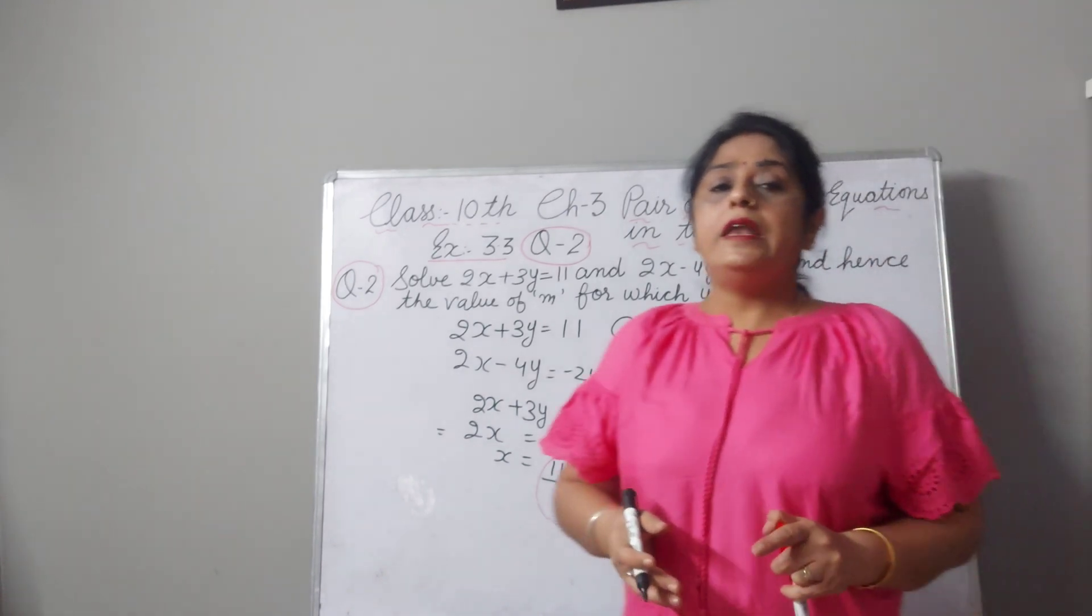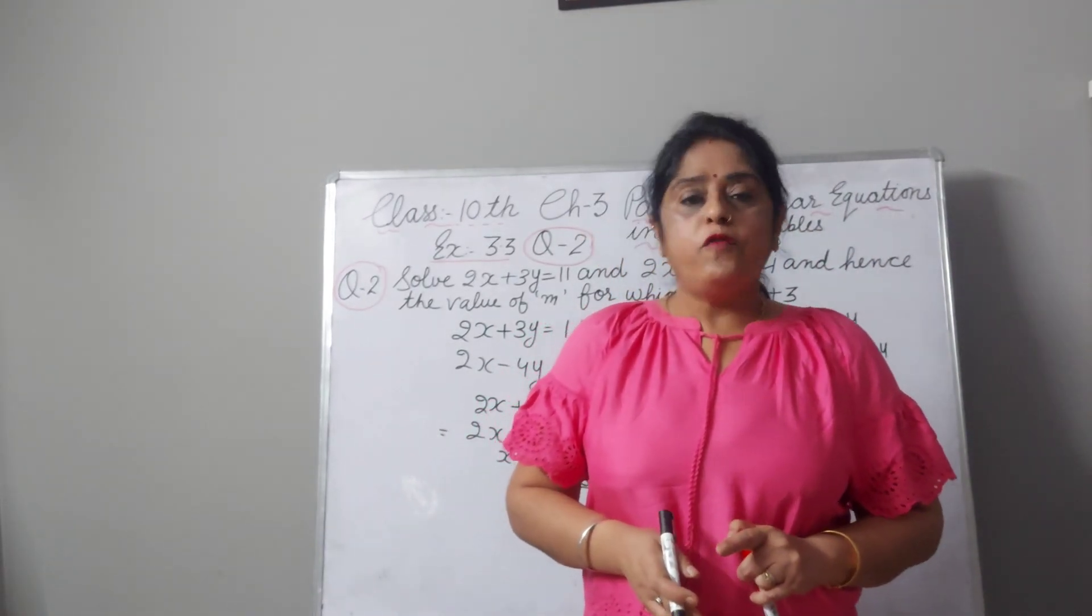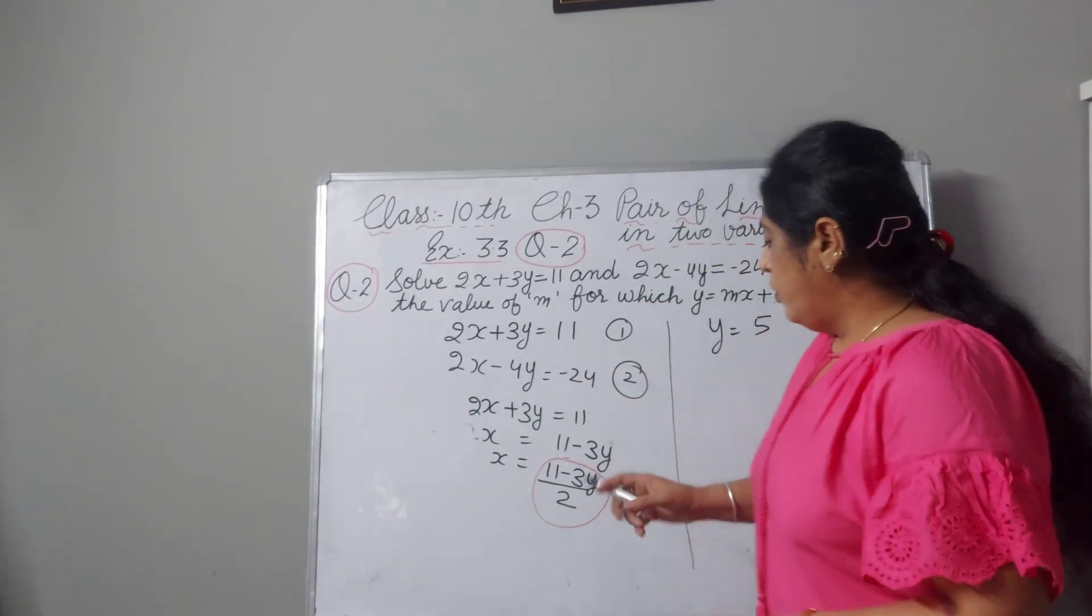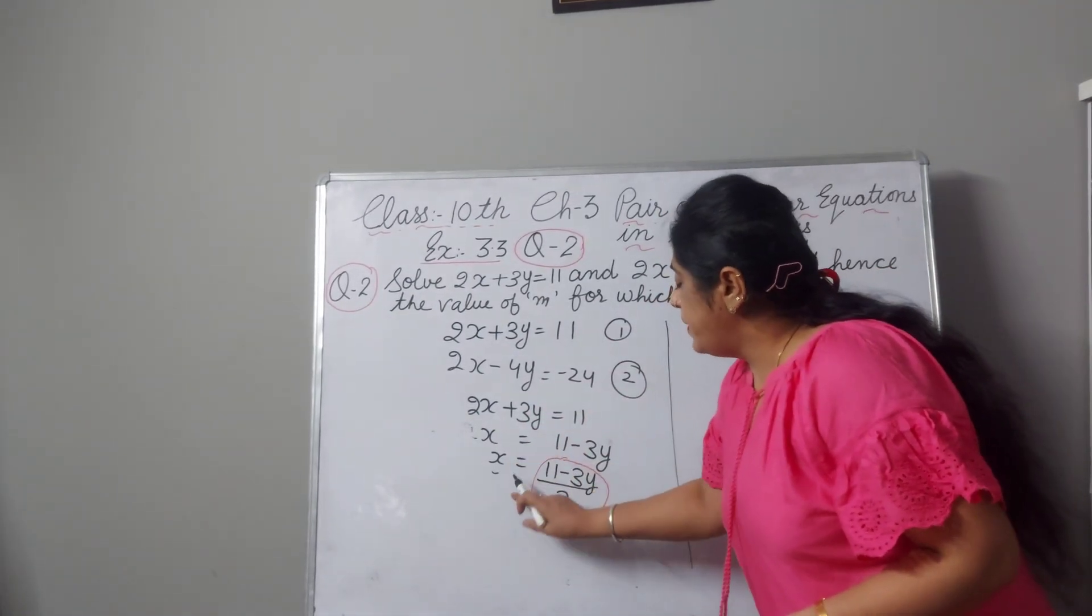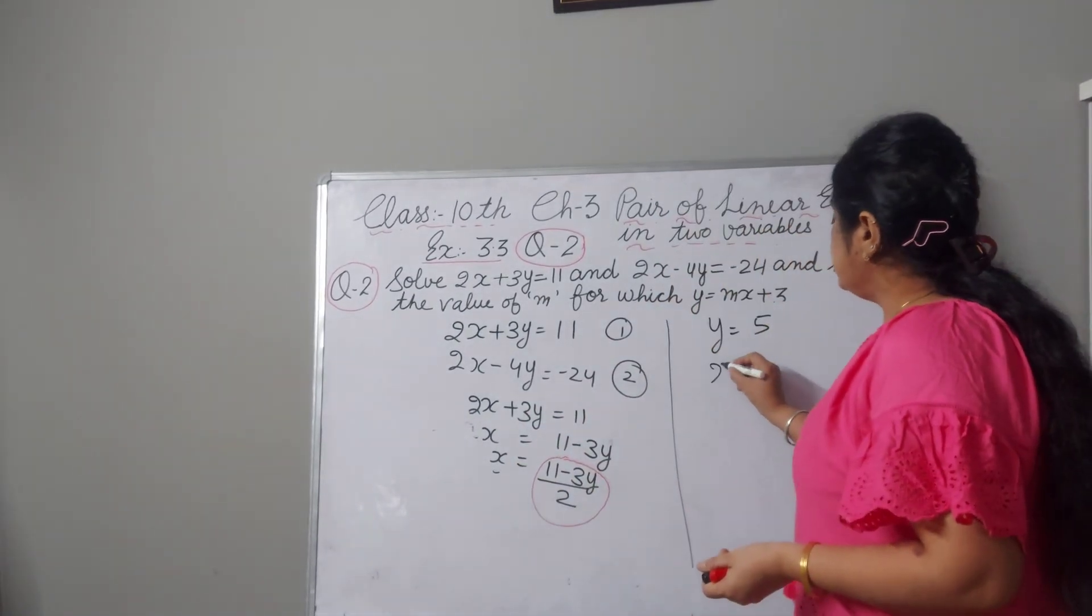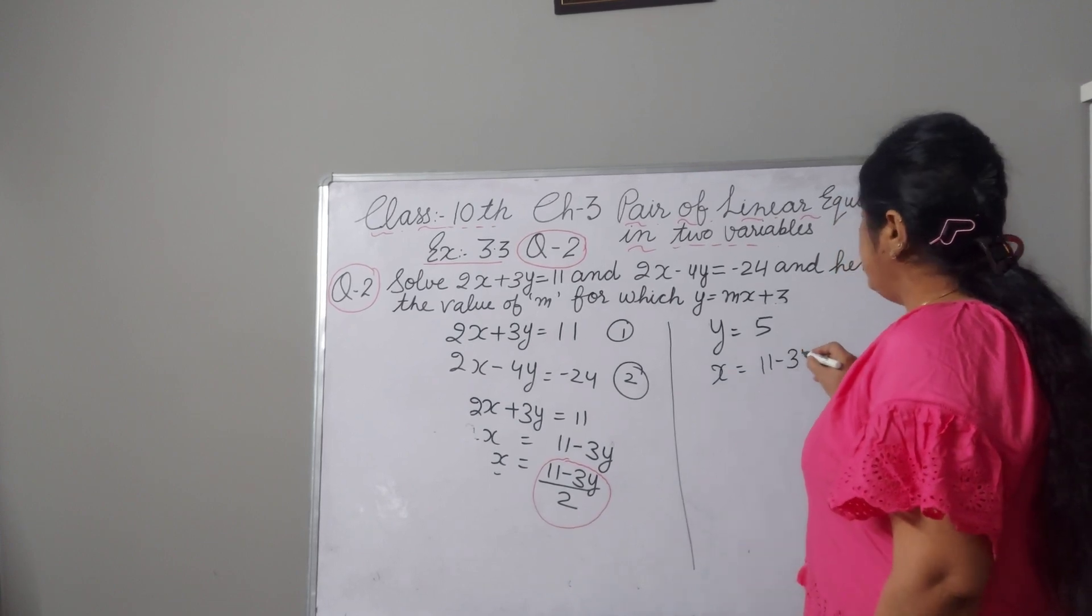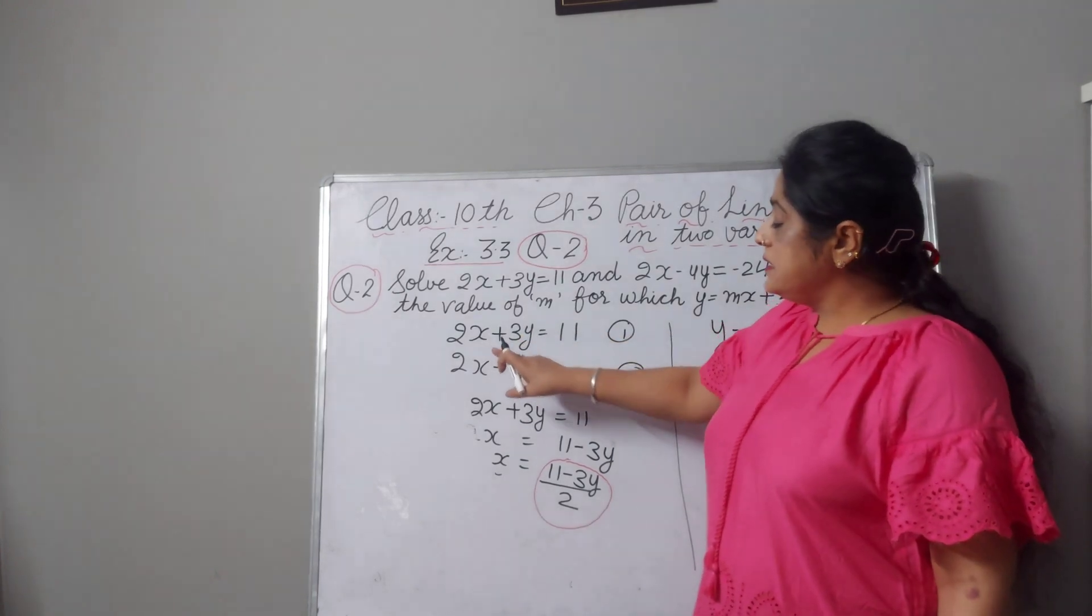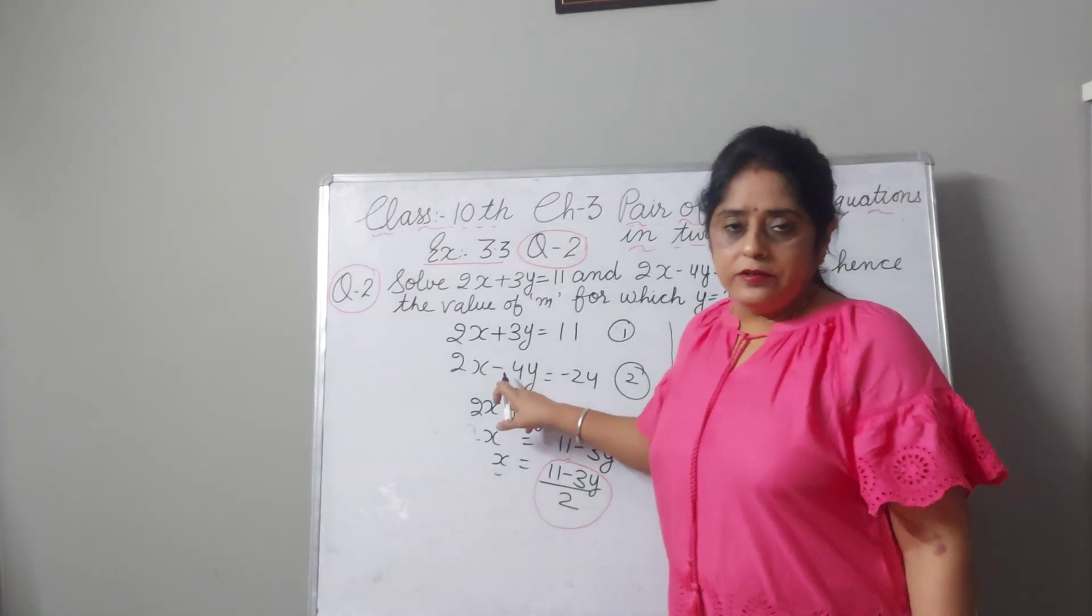Now we got the y value. Now we will find the value of x. Y value we got 5. Now we will find the value of x by putting in this. x is equal to 11 minus 3y upon 2. If you want, you can substitute here this equation or either this, it depends on you.